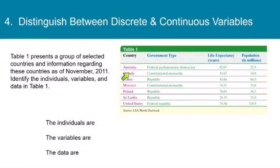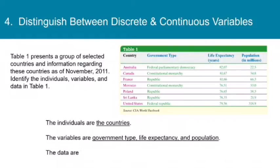Here we have a table. And in the table, we have all these different countries. And for each country is listed its government type and the life expectancy of the population of that country and the number of people that live in that country in millions. So who are the individuals? Remember, the individuals are the people or objects of interest. And so the individuals here are Australia, Canada, France, Morocco, Poland, Sri Lanka, and the United States. In other words, all the countries. The individuals are the countries. The variables are the things that we are finding out about the countries. So in this case, government type, life expectancy, and population. And the data are all the things that you see in green here. So the data are the observations for each variable.